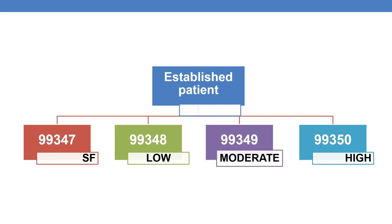Coming to established patient codes for home or residence services — there are four CPTs. 99347 requires straightforward MDM. 99348 requires low MDM. 99349 requires moderate MDM. And 99350 requires high complexity medical decision making.